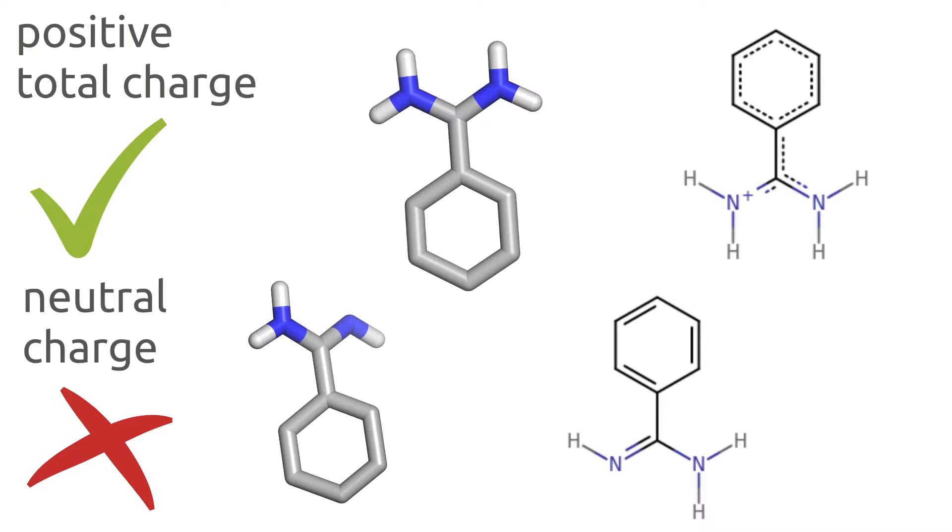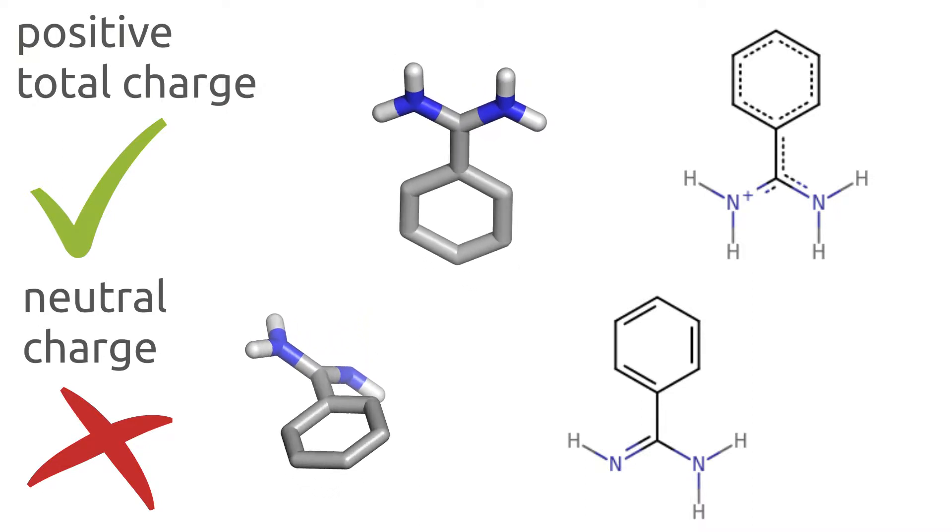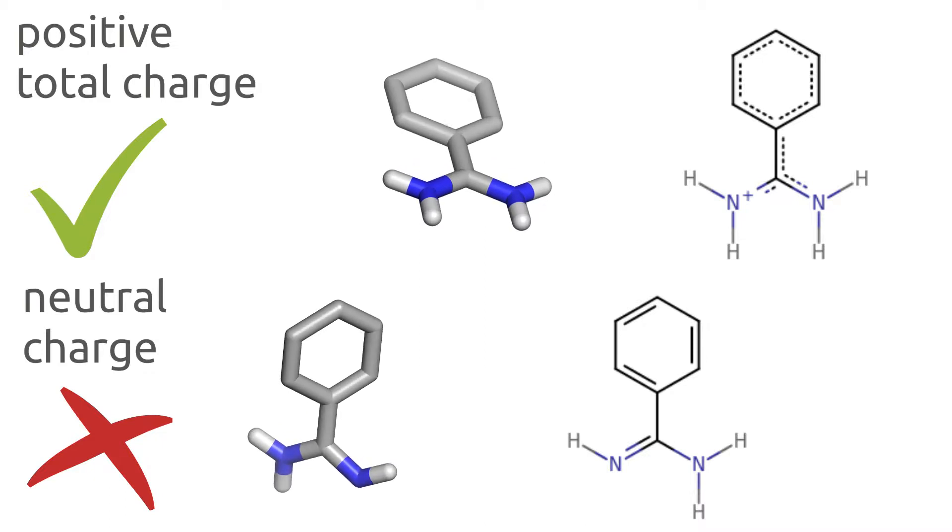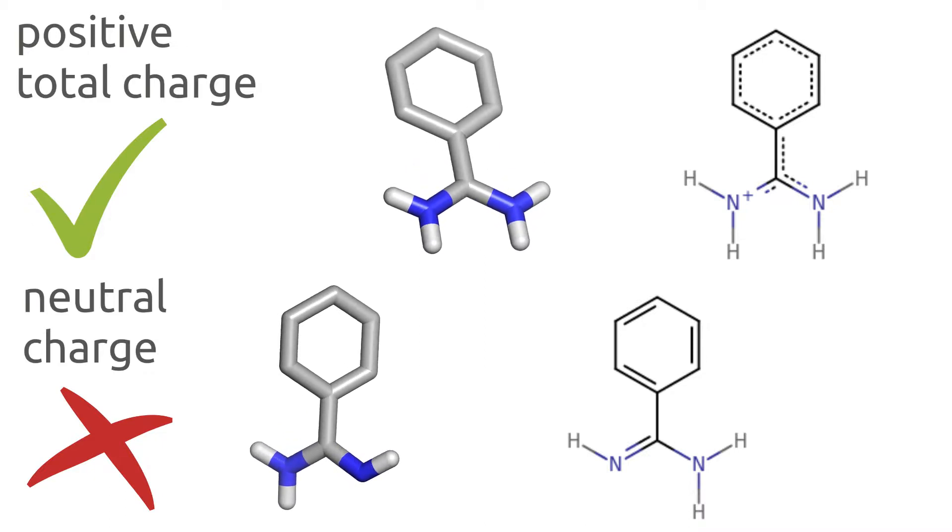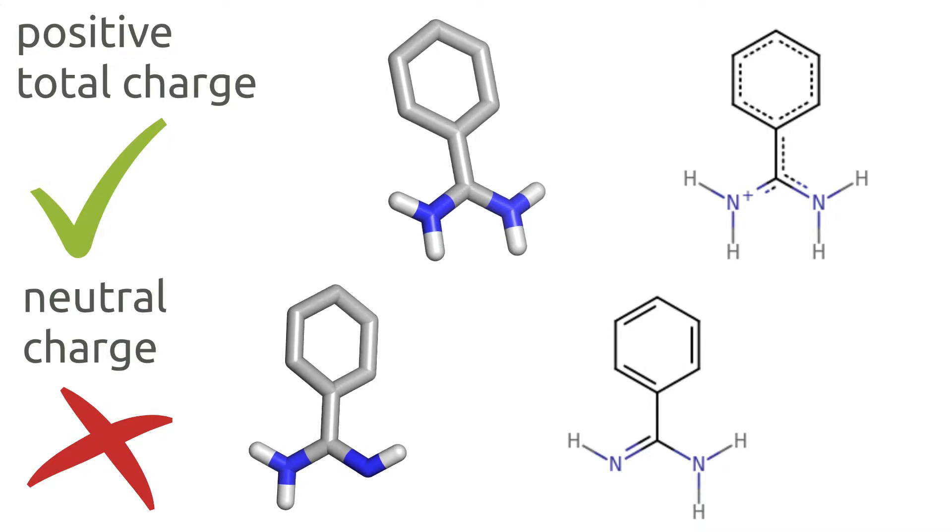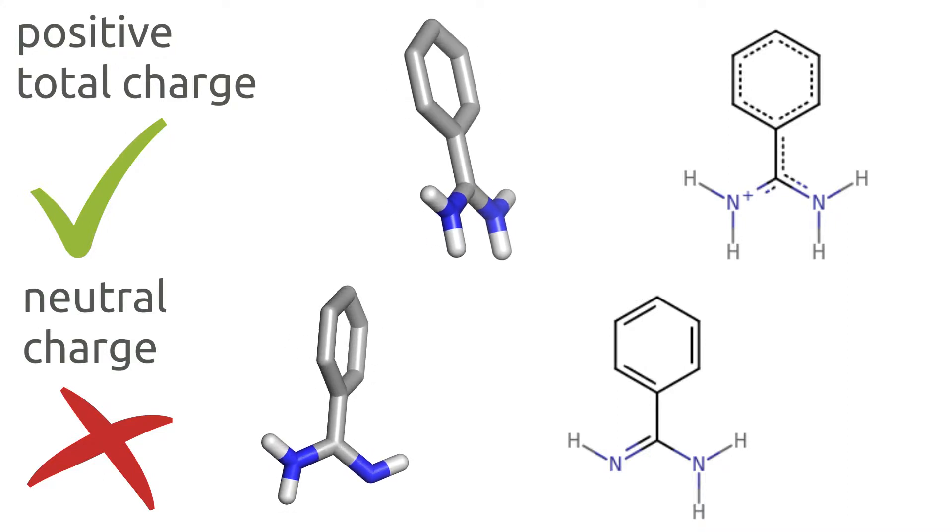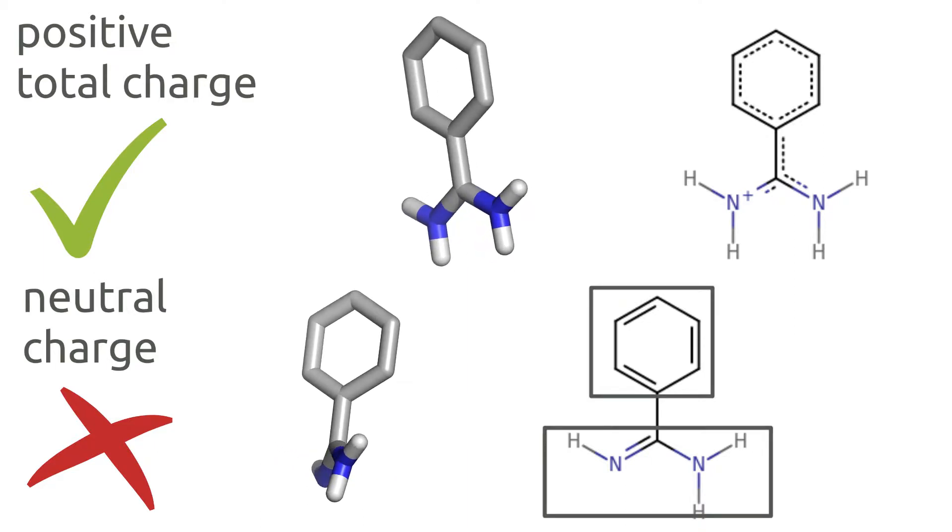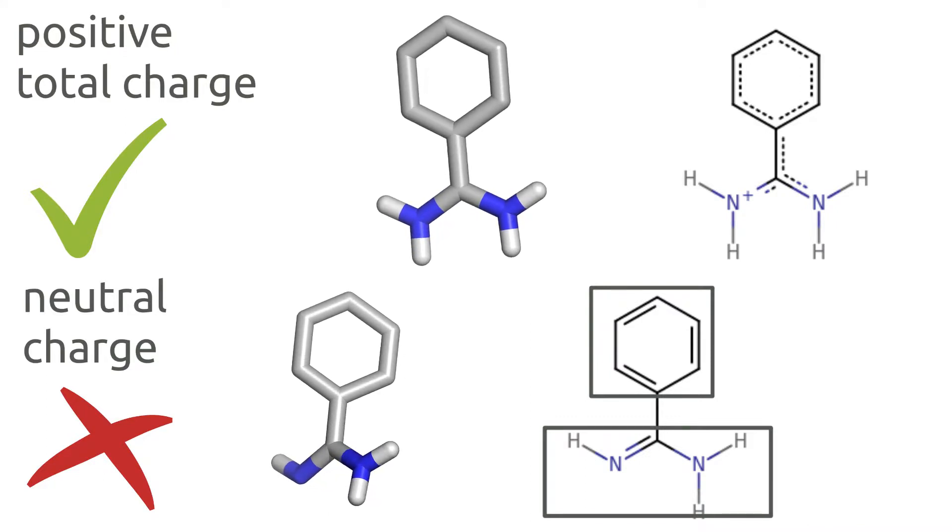Here below we can see the benzimidine, which is a widely used small ligand to test out some docking methods. And due to the positive charge and the electron delocalization seen in the Lewis structure, actually the 3D structure of the ligand is planar. However, if we don't account for the positive charge, then the bond between the benzene ring and amidine group will become flexible and thus will generate some incorrect structural artifacts.